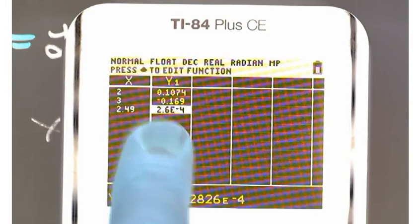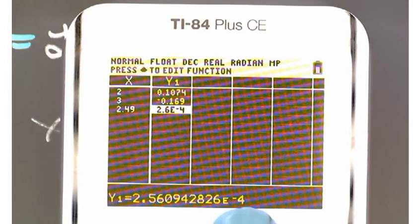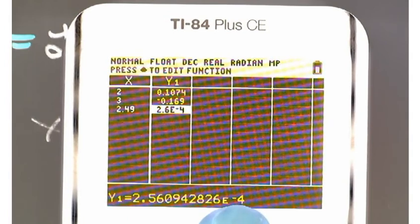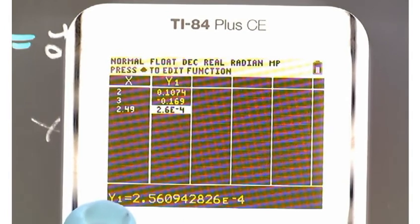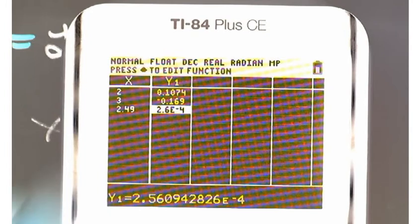If you put the cursor on y, you can see there's times 10 to the negative fourth. That means there's three zeros in front of this. So you're getting pretty close, but you're not quite there yet. But yeah, unfortunately, you can't put in the zero there.